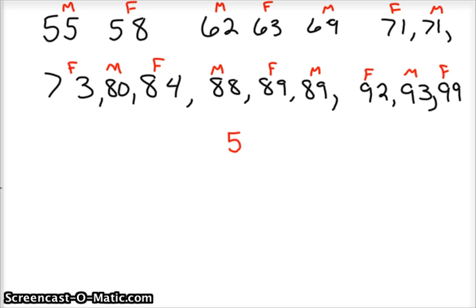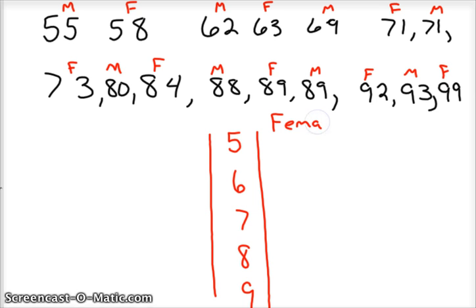And so your stem's still the same, 5, 6, 7, 8, and 9. The difference is, is that on the right side, maybe we'll put female students. On the left side, we'll put male students. So if you had some categories to go by, this is great. So on the males, we had 1 55. And on the females, we had a 58.